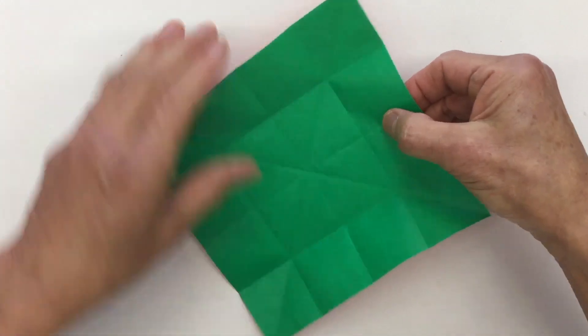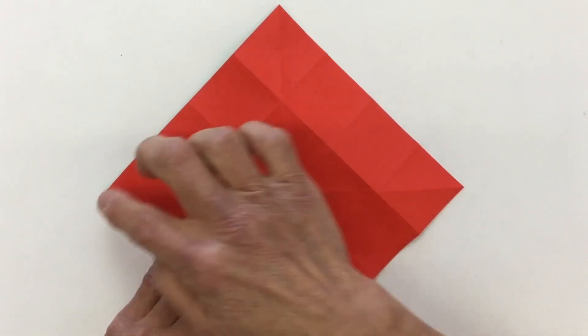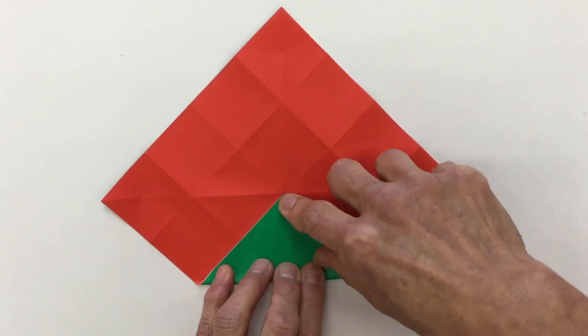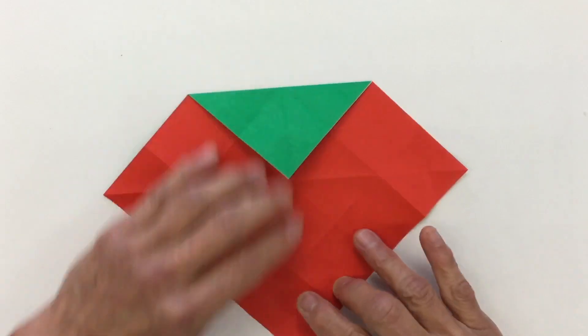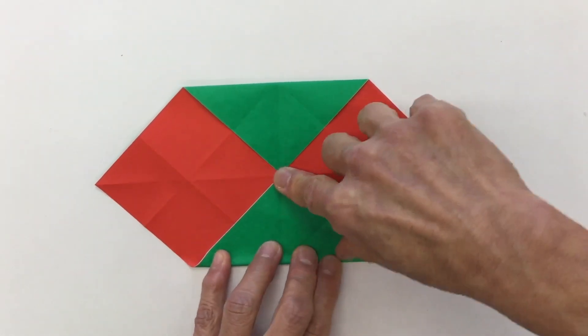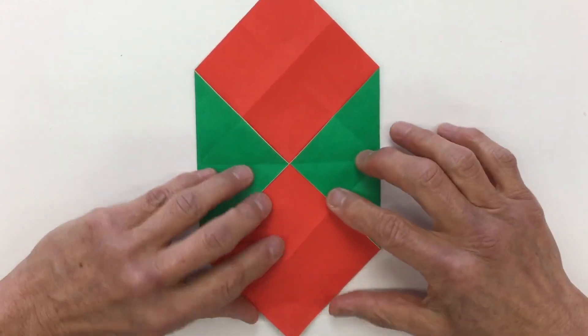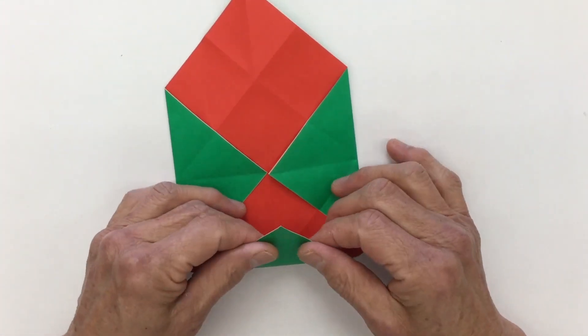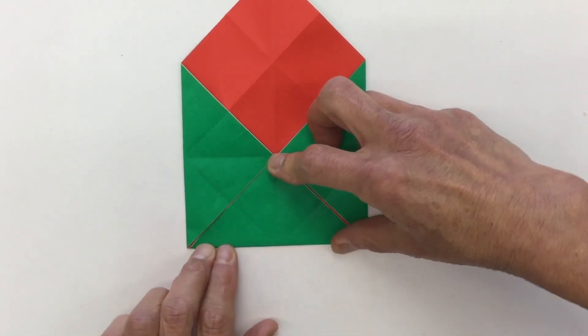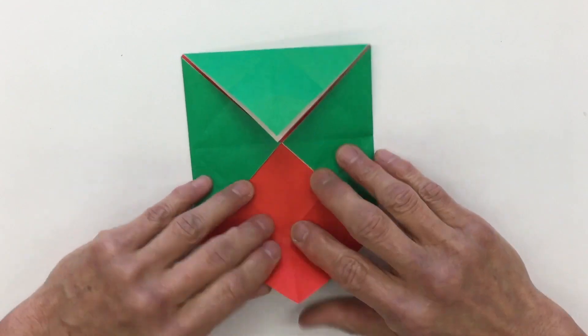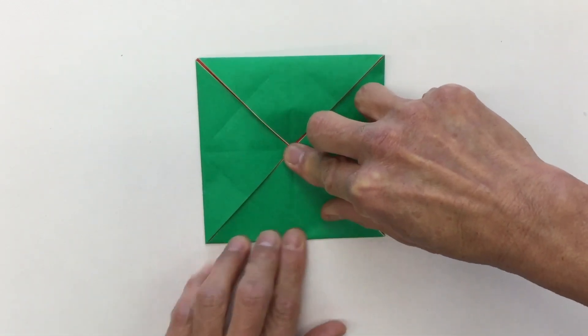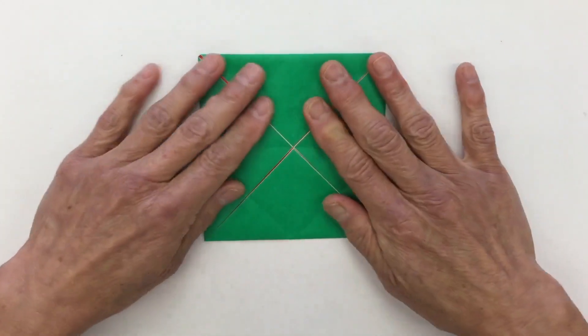Now we flip it over. And we fold each one of these corners into the center. Shift. These two corners just touch. Shift. Shift. Last one. All the four corners come together in the center.